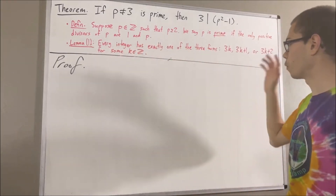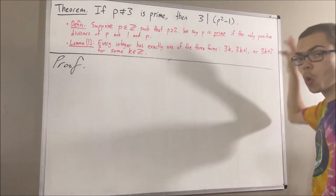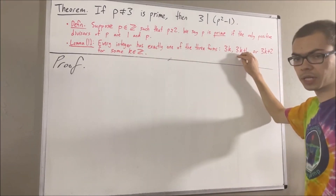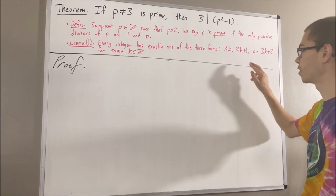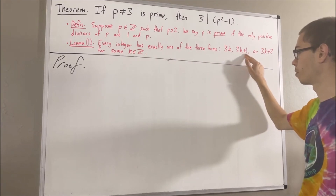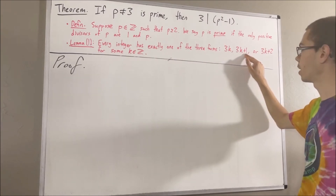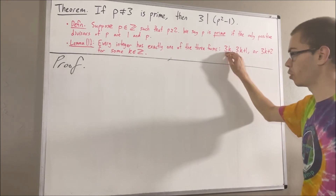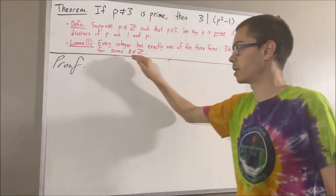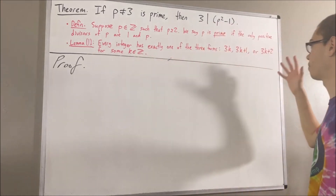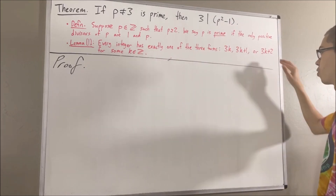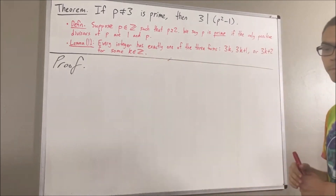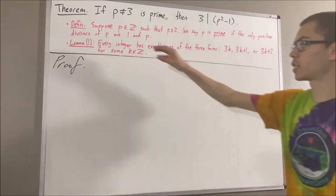For example, 7 only has the form 3k plus 1, because 7 is equal to 3 times 2 plus 1. 7 cannot be expressed in the form 3k for some integer k, and 7 cannot be expressed in the form 3k plus 2 for some integer k. That's what this means.